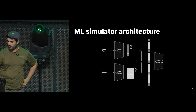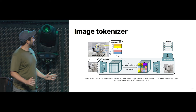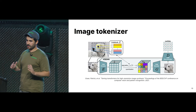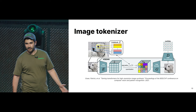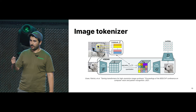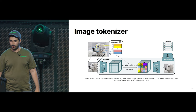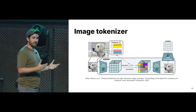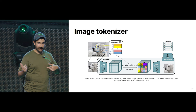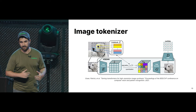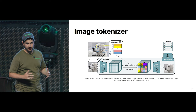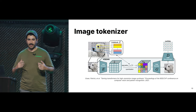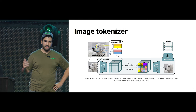An image tokenizer is basically a fancy image compressor — an ML image compressor that takes in images and compresses them into a set of tokens. A token is just a discrete number that can only take a small set of values from a dictionary. It encodes images with many pixels into a set of discrete tokens — usually 128 to 512 tokens. It comes with a detokenizer or image decoder that brings you back to image space. This model is trained with a GAN loss — a generative adversarial loss — which is what's usually referred to as a VQGAN.